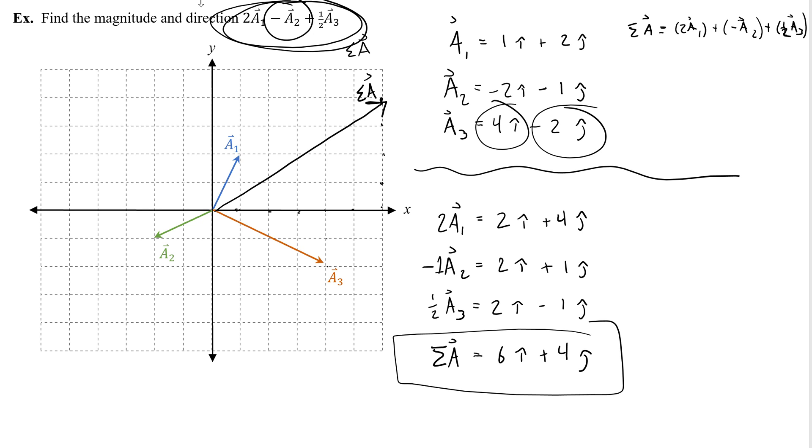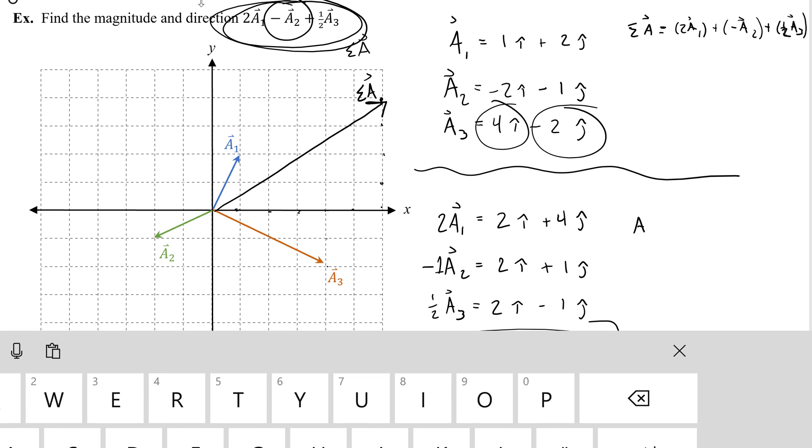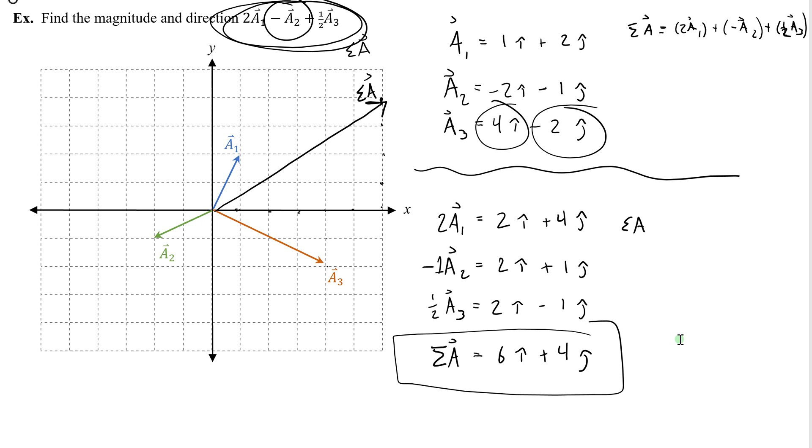Let's find its magnitude. To find the magnitude sigma a, you can do the square root of 6 squared plus 4 squared. The square root of 6 squared plus 4 squared is 7.2.